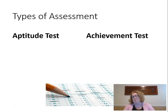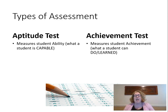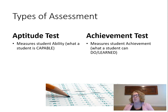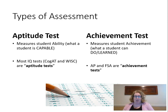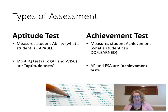Next, we'll talk about aptitude and achievement tests. An aptitude test measures ability — what a student is capable of, kind of what they're born with. An achievement test is what students can do or what they've learned. An aptitude test is really another word for an IQ test or intelligence test — the COGAT, the WISC, and the Otis-Lennon are all examples of aptitude tests.